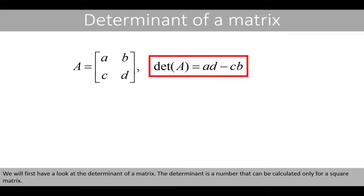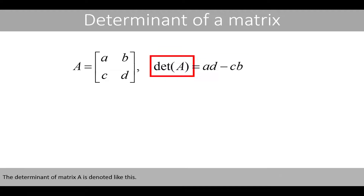We'll first have a look at the determinant of a matrix. The determinant is a number that can be calculated only for a square matrix. The determinant of matrix A is denoted like this.